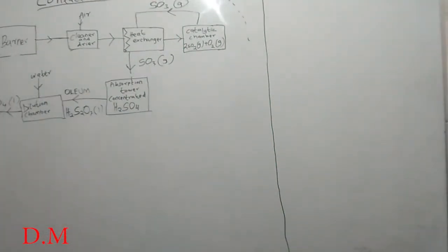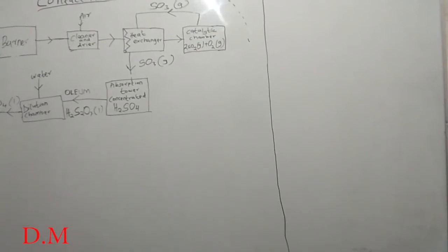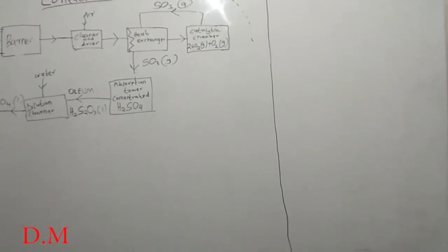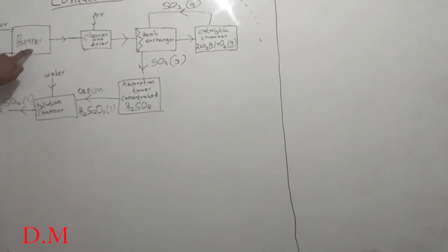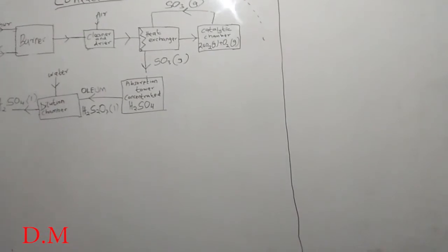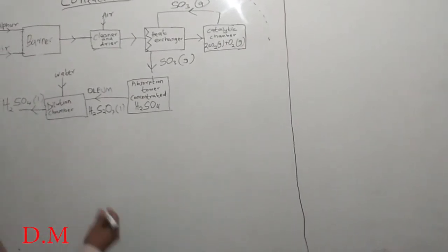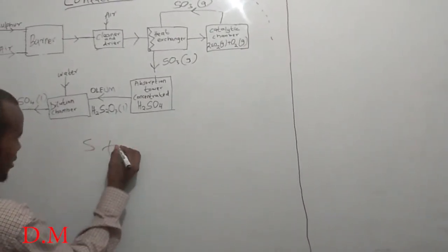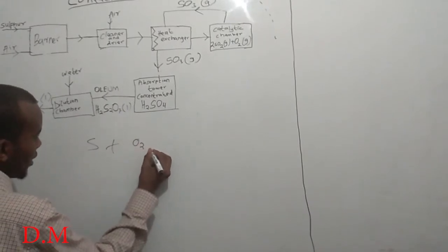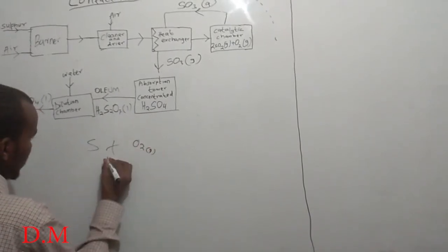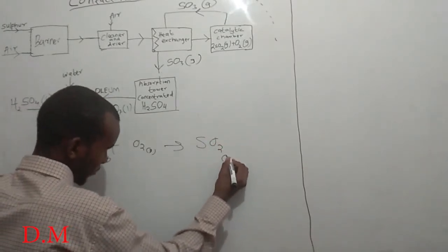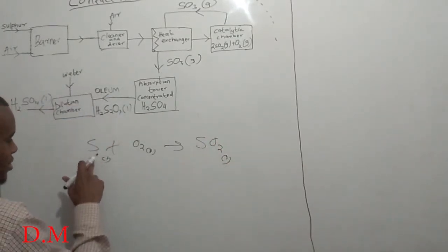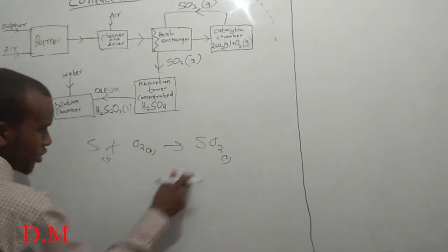The raw materials for this process are sulfur and air — sulfur and oxygen. Sulfur and air are burned and reacted: sulfur plus oxygen gas forms sulfur dioxide gas. There is one sulfur and two oxygen on each side, so the equation is balanced.